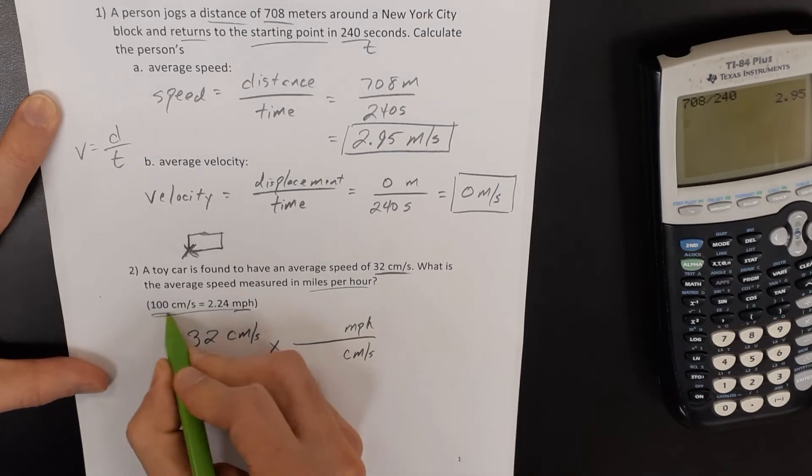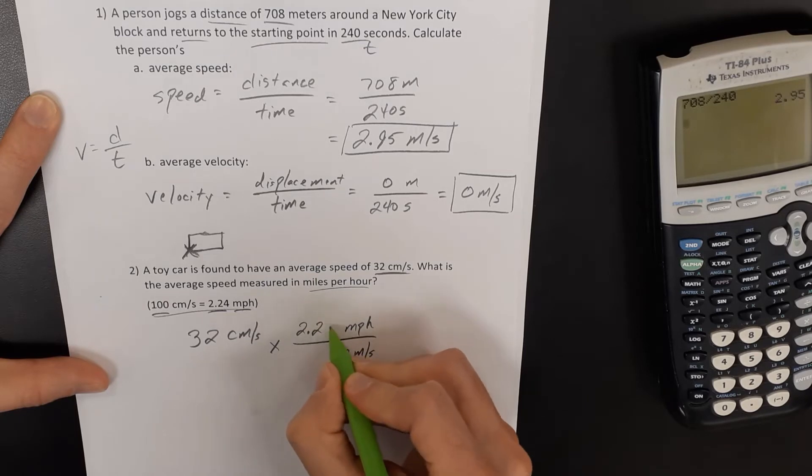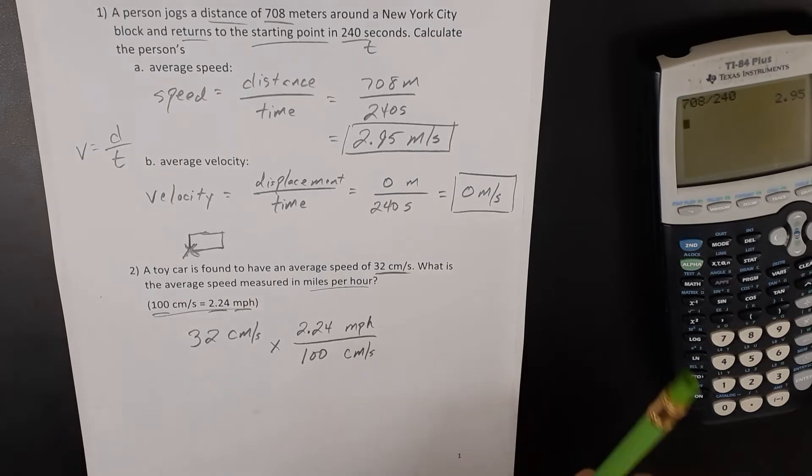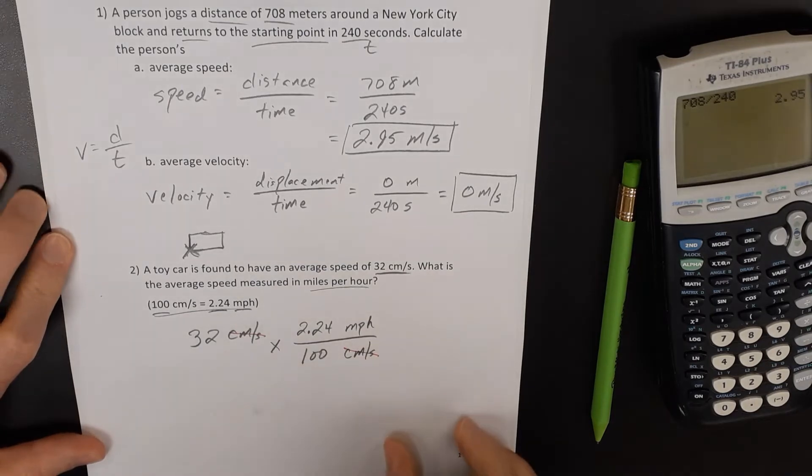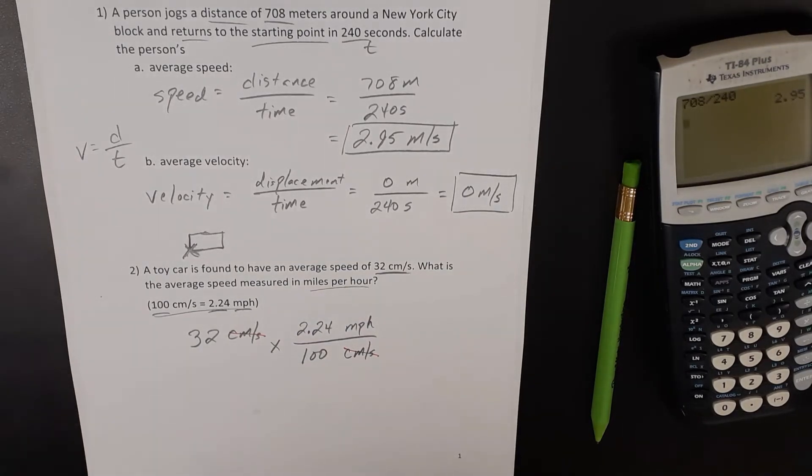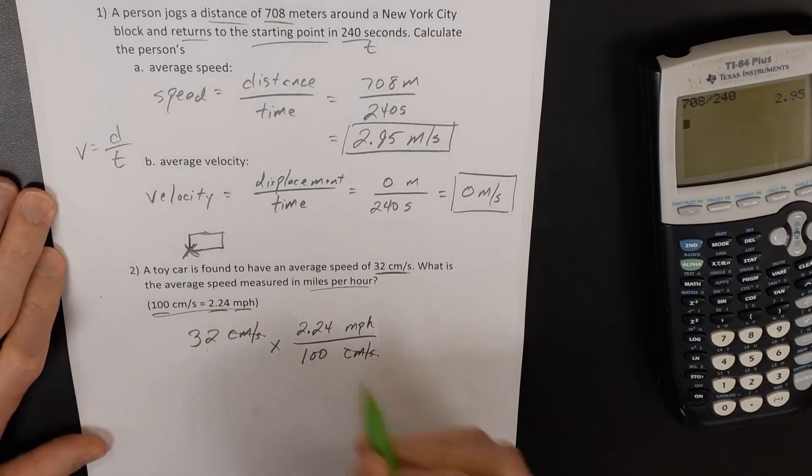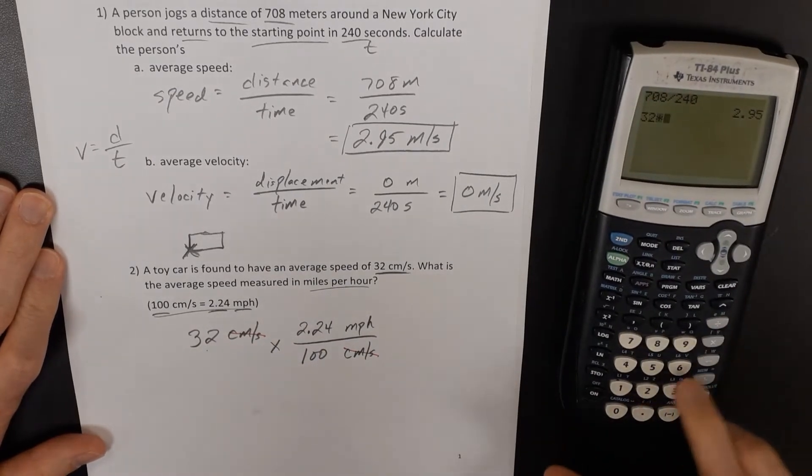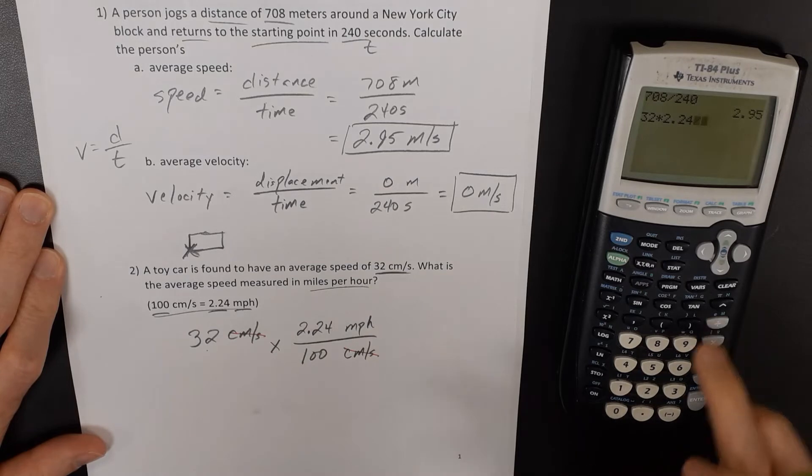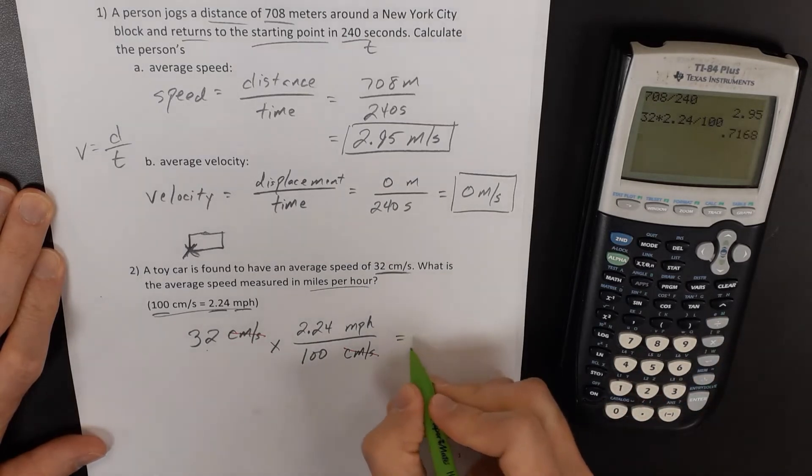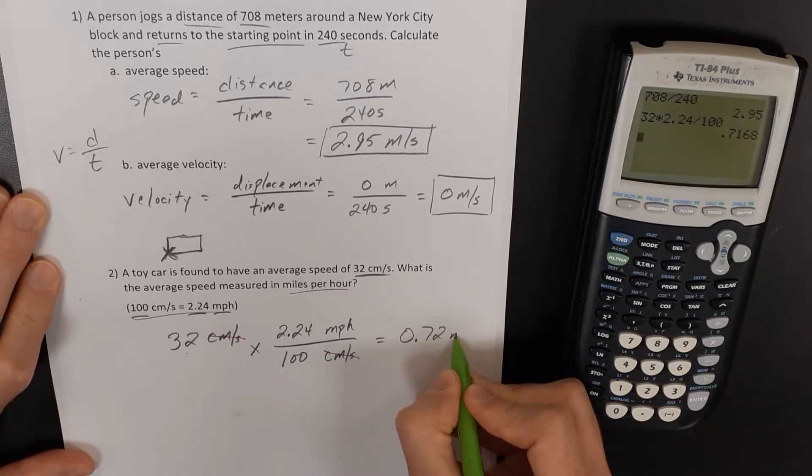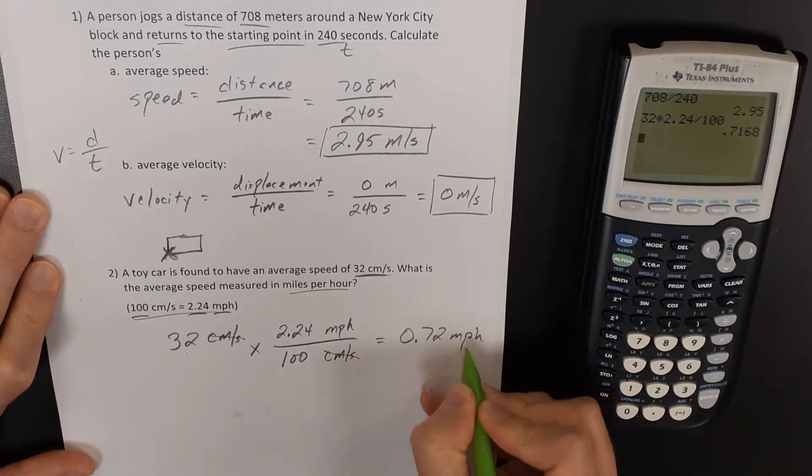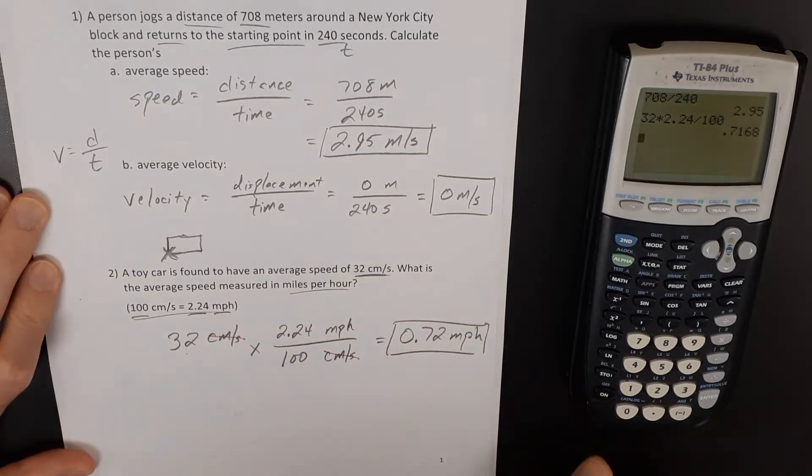And then I'm just going to plug in these values that 2.24 miles per hour is equivalent to 100 centimeters per second. And so centimeters per second is being divided by centimeters per second and those cancel out. And so now I have 32 times 2.24 divided by 100, and so I get a speed here of 0.72 miles per hour.